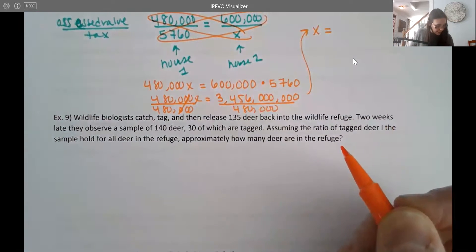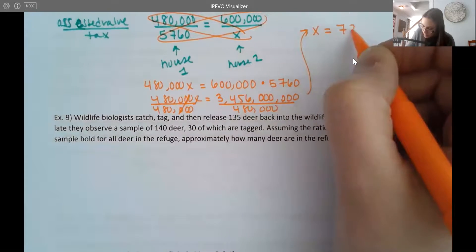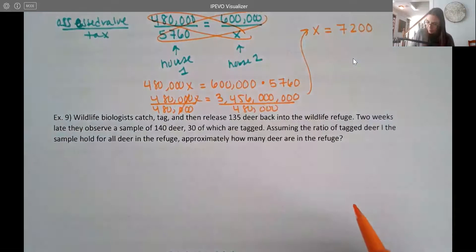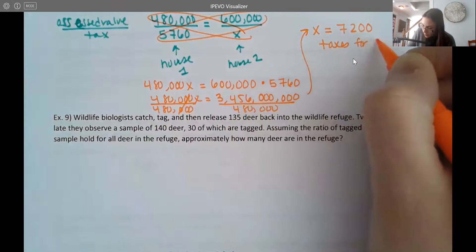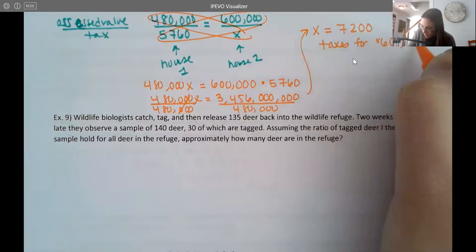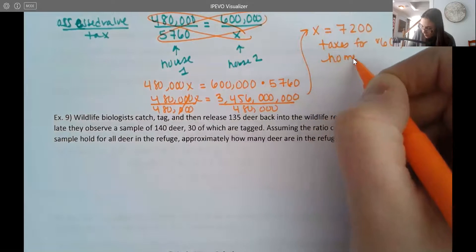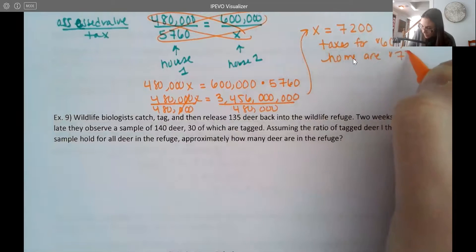And let's see, I get here 7,200. So the taxes for the $600,000 home are $7,200.